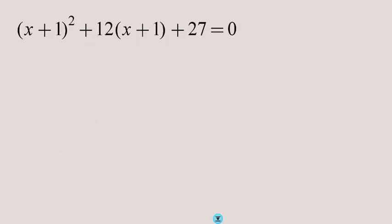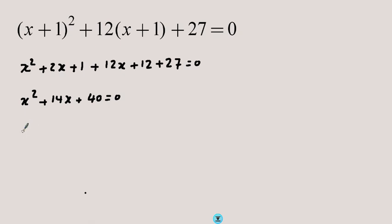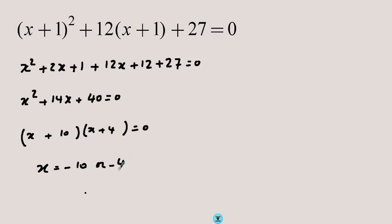Yet another example. You may be tempted to solve by expanding: expanding gives x squared plus 2x plus 1 plus 12x plus 12 plus 27 equals 0. Collecting like terms gives x squared plus 14x plus 40 equals 0. Factorizing gives (x + 10)(x + 4), so x equals negative 10 or negative 4. This method is correct, but it requires expanding.